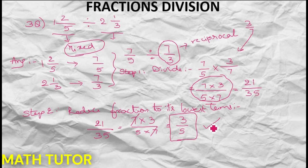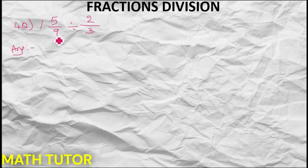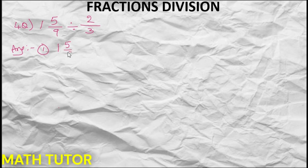Now let us see one more example, doing it a little faster without following every step separately, but keeping the rules: if there is a mixed fraction convert to improper fraction, then division becomes multiplication, find the reciprocal. So: 1 and 5 by 9 divided by 2 by 3. Convert the mixed fraction: 9 times 1 plus 5 equals 14 by 9. Then we write 14 by 9 times 3 by 2 (reciprocal of 2 by 3).